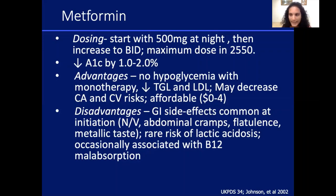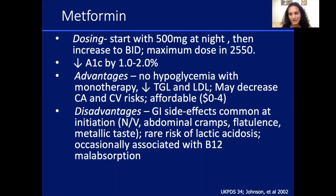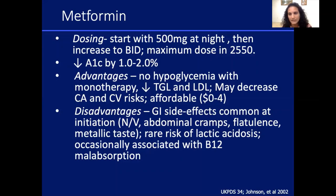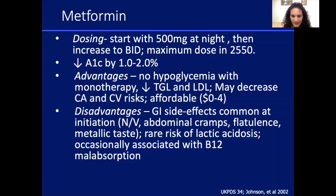If his A1C were 9 or 10, monotherapy may not be enough and you may need to start two agents. Sometimes patients will say 'give me a trial of diet and exercise first,' and if they do that, I'm fine starting monotherapy with metformin. Advantages: no hypoglycemia when used alone, can lower triglycerides and LDL, may decrease cardiac risk, and it's very affordable — free at Publix in Georgia, $4 at most other pharmacies. Disadvantages: GI side effects, very rare risk of lactic acidosis, and occasionally B12 malabsorption.